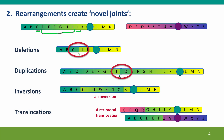Similarly, with a duplication we again have a novel joint between these sequences and these sequences. We can also have novel joints created by inversions, where sequences now pointing in the opposite direction are joined in novel ways. And, of course, we can have novel joints caused by translocations that bring together sequences that used to be on independent chromosomes.